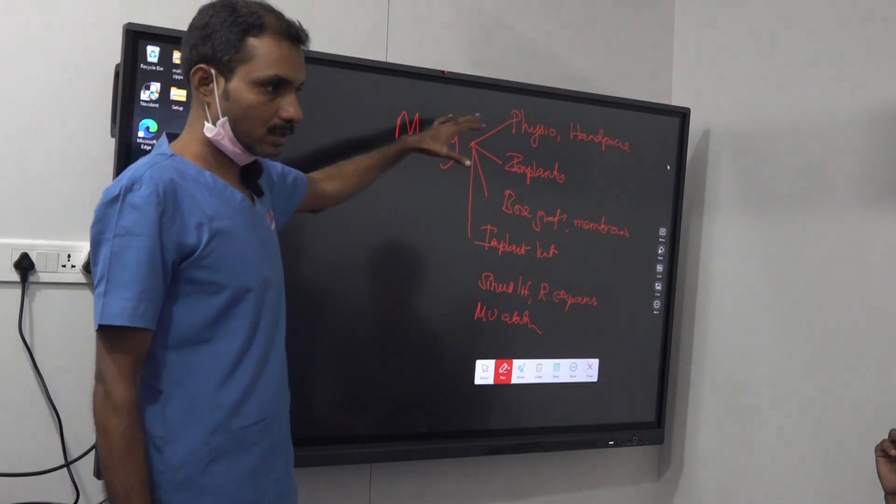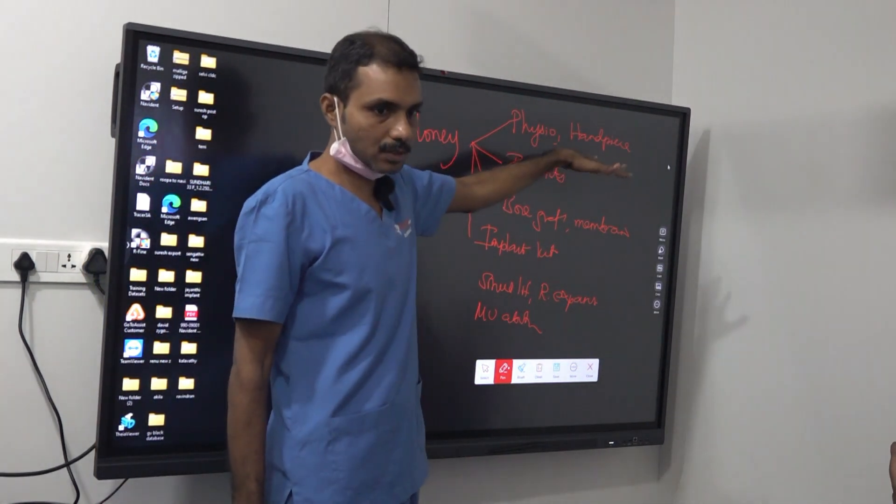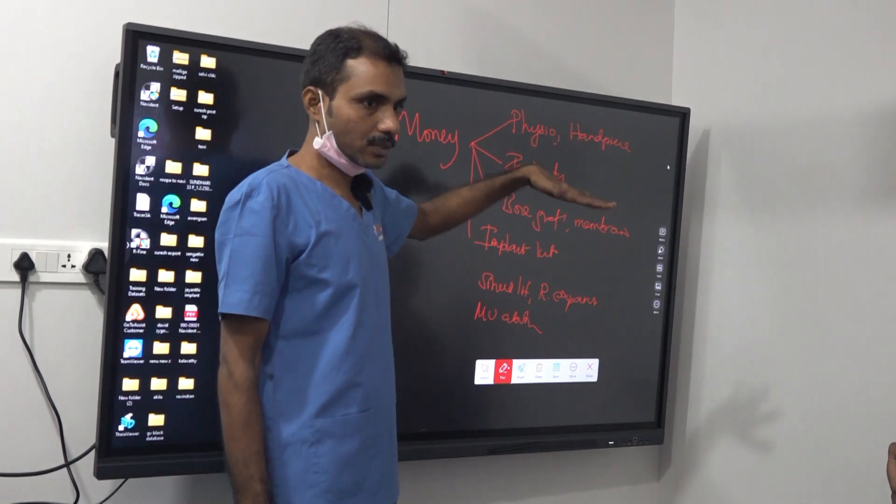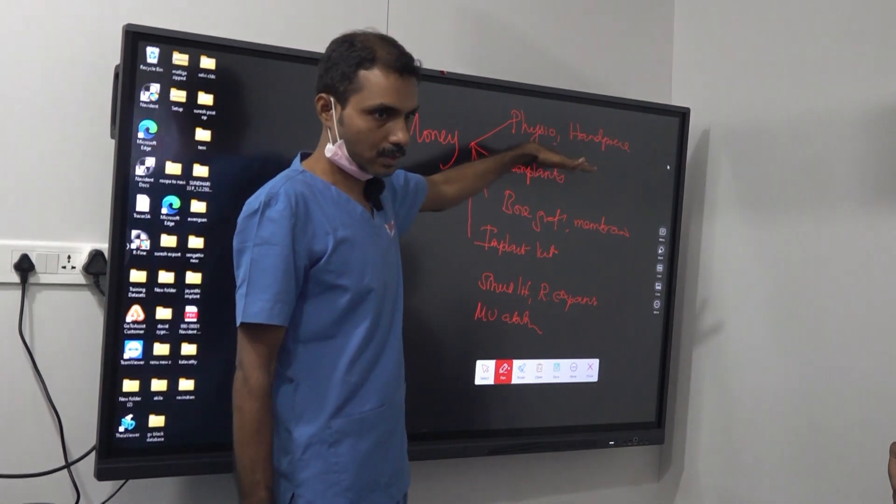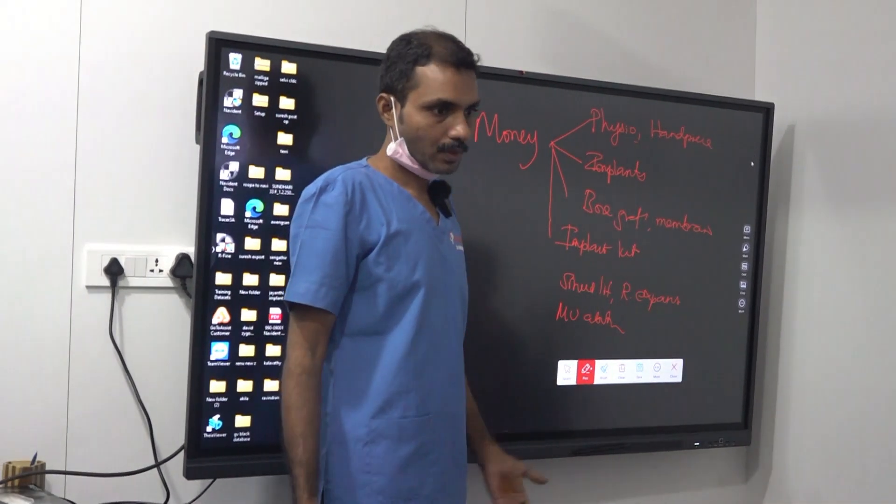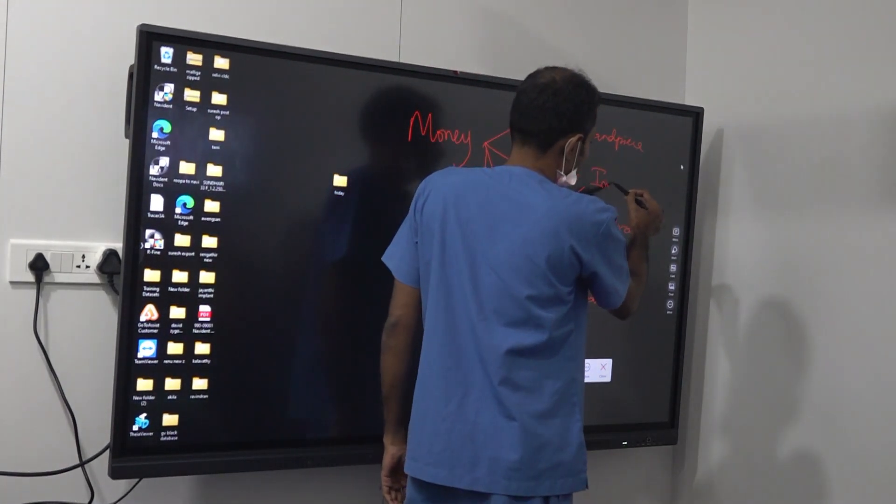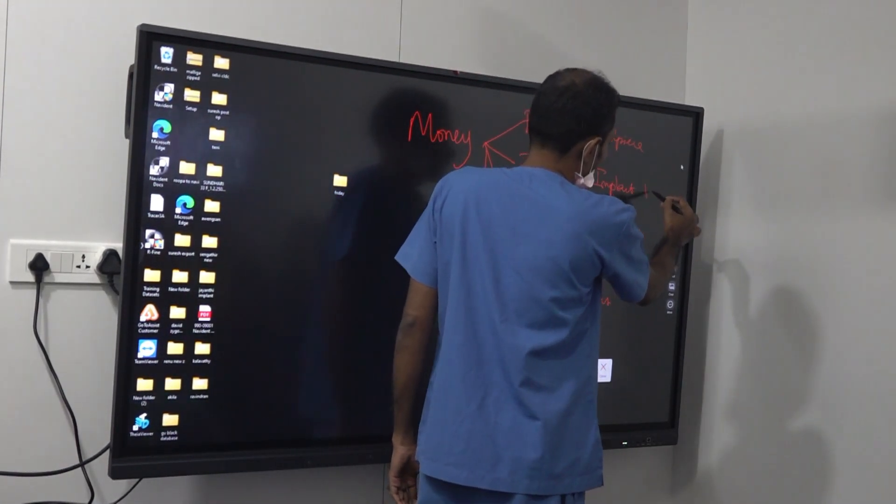Out of this, what is essential we will discuss. First thing is physio and antivirus - this is a must. Any implant, whether conventional or basal, you need to have this first. Second is what implant you are going to place, whether it may be conventional or basal - that implants and that implant kit.